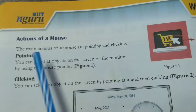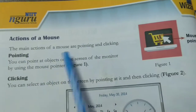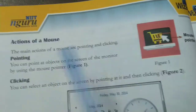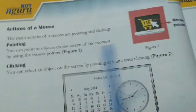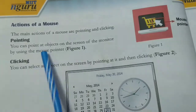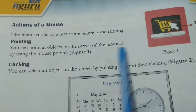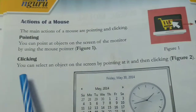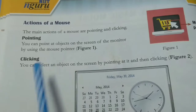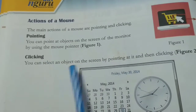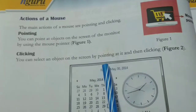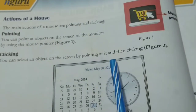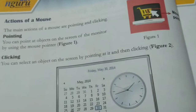Actions of a mouse. The main actions of a mouse are pointing and clicking. Pointing: you can point at objects on the screen of a monitor by using the mouse pointer. Clicking: you can select an object on the screen by pointing to it and then clicking.